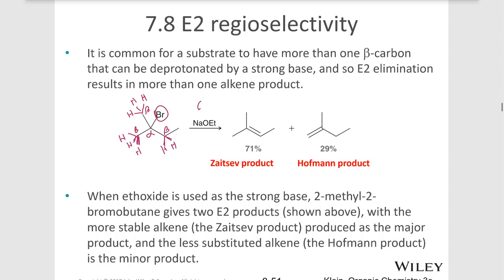So let's remember the mechanism here for the E2 reaction. The alkoxide pulls off a hydrogen, forms the double bond from the two electrons that were in that bond to the hydrogen, kicks out the leaving group. And so if we pulled off one of those six hydrogens we would get this product on the right.